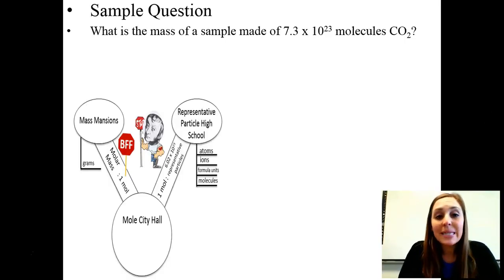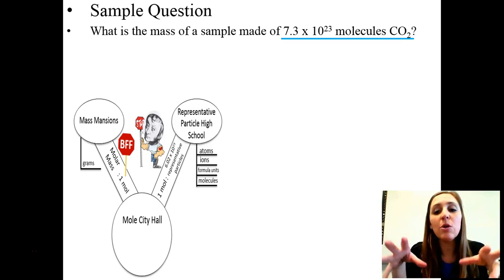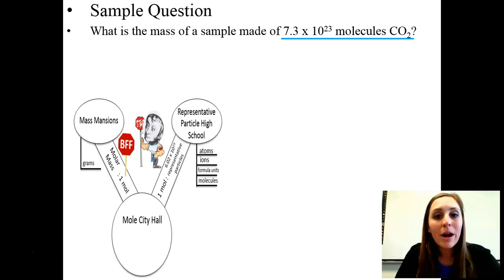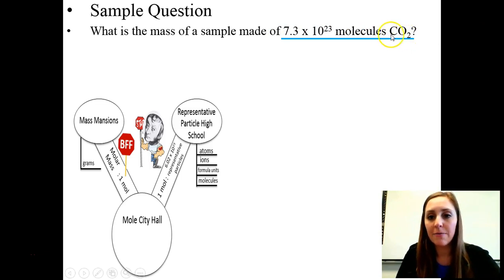Alright, here's our first problem. What is the mass of a sample made of 7.3 times 10 to the 23rd molecules of carbon dioxide? So what is our known here? Our known is 7.3 times 10 to the 23rd molecules of carbon dioxide. That's what you actually have in the lab. So that's where we're starting. And on moleville, if you look at the map, where is that? Well, what's our unit? This is our number.